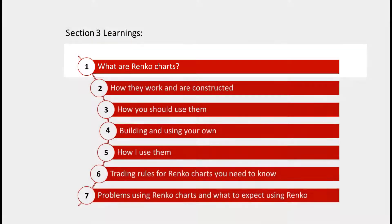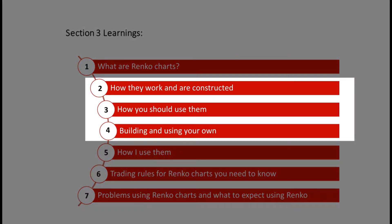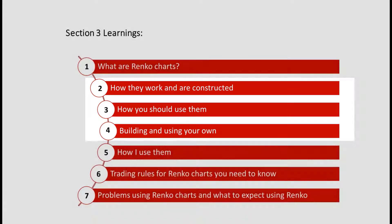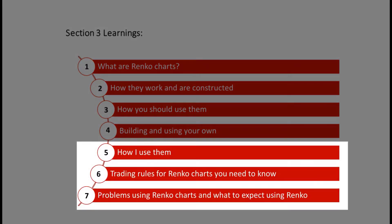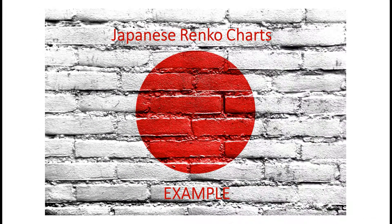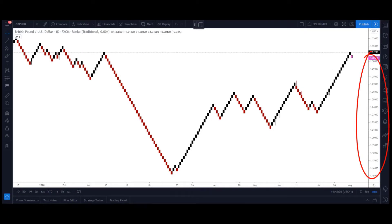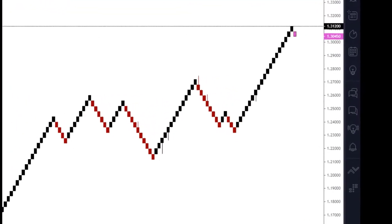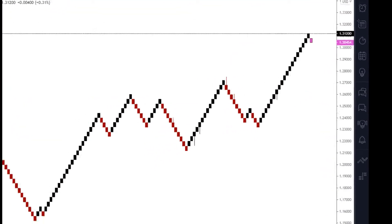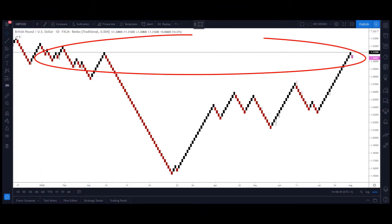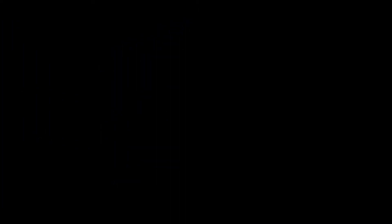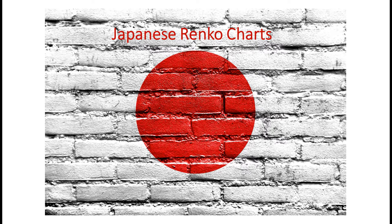Section three is really about the detail of Renko charts — what are they, how they're constructed, how to use them, the trading rules you should know, and what problems to expect. Looking at an example: GBP against the US dollar. On the right we have the price axis, at the bottom we have time, with red bricks showing down movement and black bricks showing up movement in price. Zooming in, we can see this simplifies the trend very nicely to a much smoother process, making support and resistance lines more clearly visible.